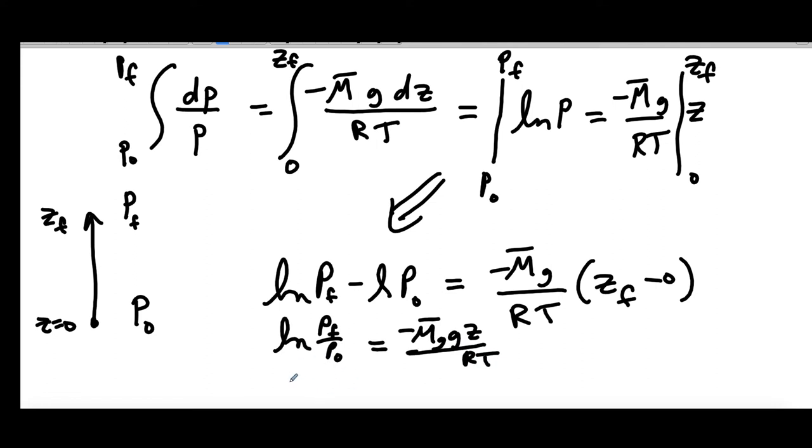Take the exponent of both sides and we get P final over P naught is equal to e to the minus mg z over RT. And if we multiply both sides by P naught, we get our final expression. P at some altitude final is equal to P naught e to the minus mg z or H or whatever you want to call the altitude over RT.